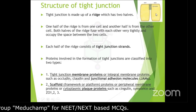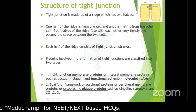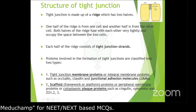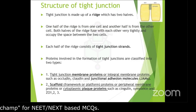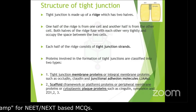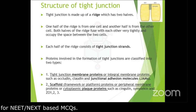Looking at the structure of the tight junction — it is made up of ridges, each having two halves. One half belongs to one cell and the other half belongs to the neighboring cell. Both halves of the ridges fuse with each other very tightly, occupying the space between the two cells.